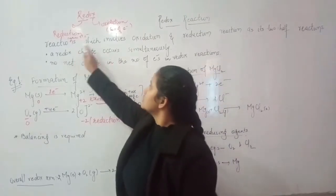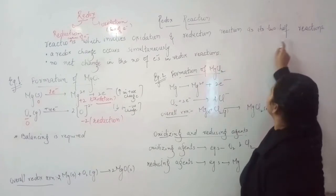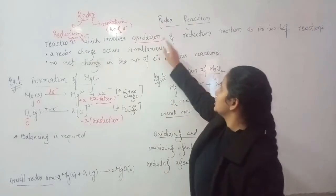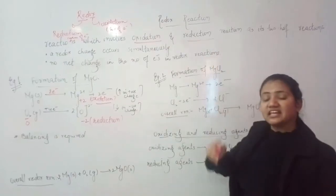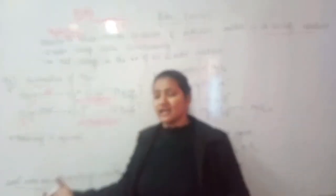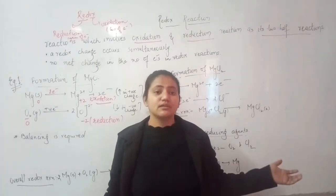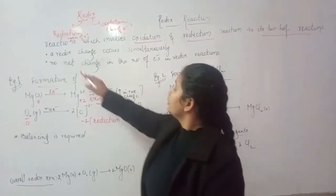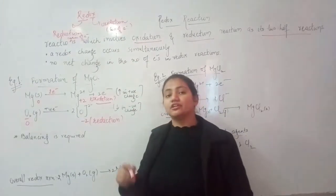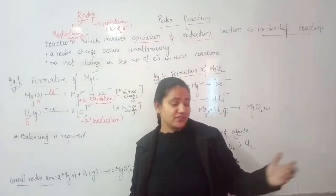Reactions which involve oxidation and reduction as its two half-reactions — meaning the reaction in which both processes, oxidation and reduction, take place simultaneously. Two half-reactions means on one side oxidation is being done, and on the other half side the reduction is being done.